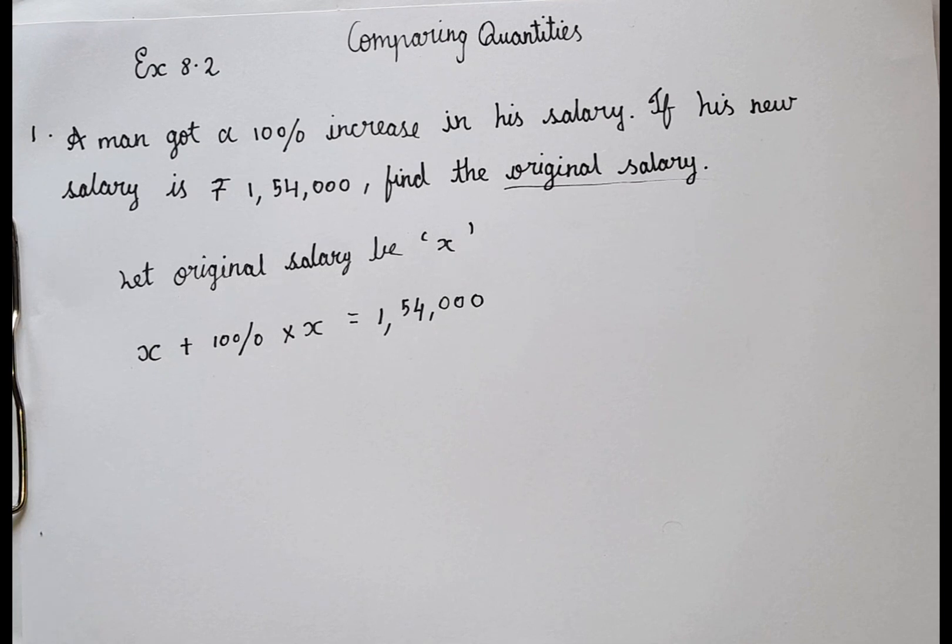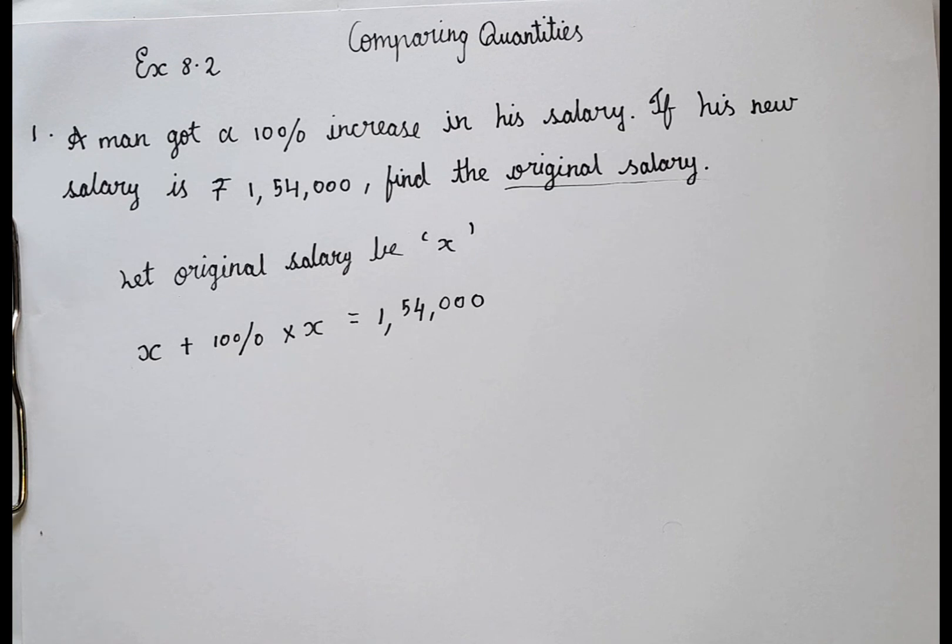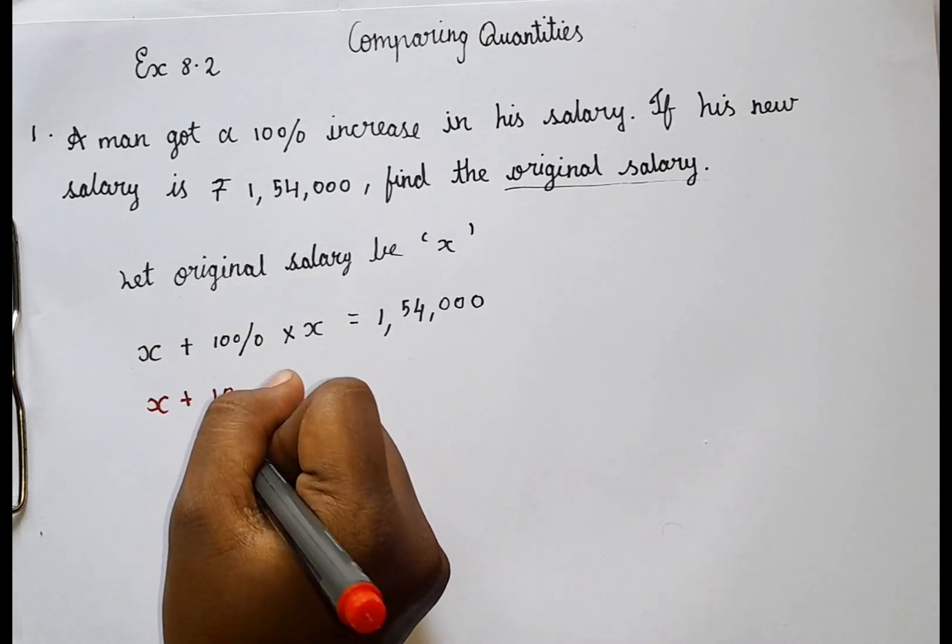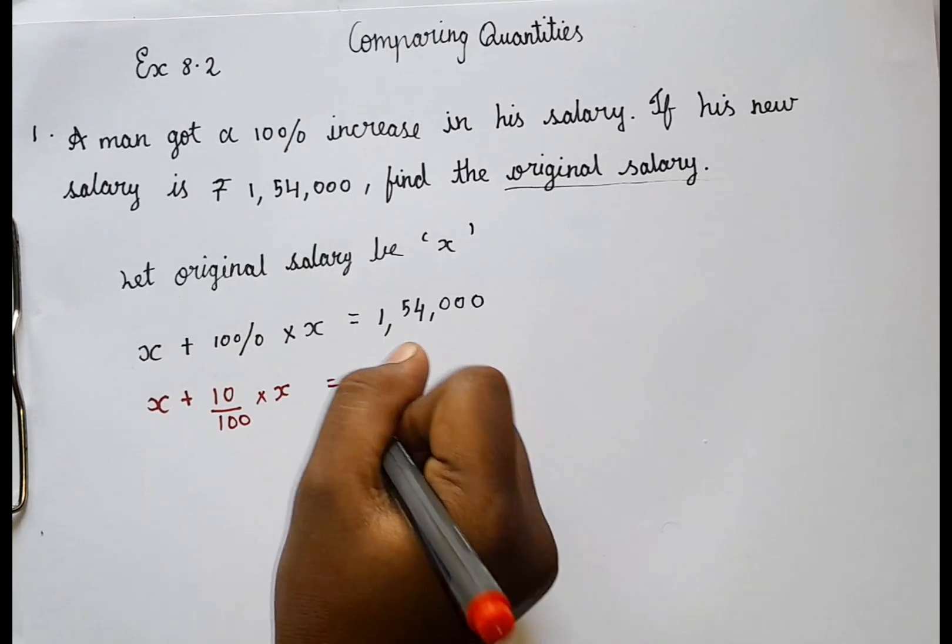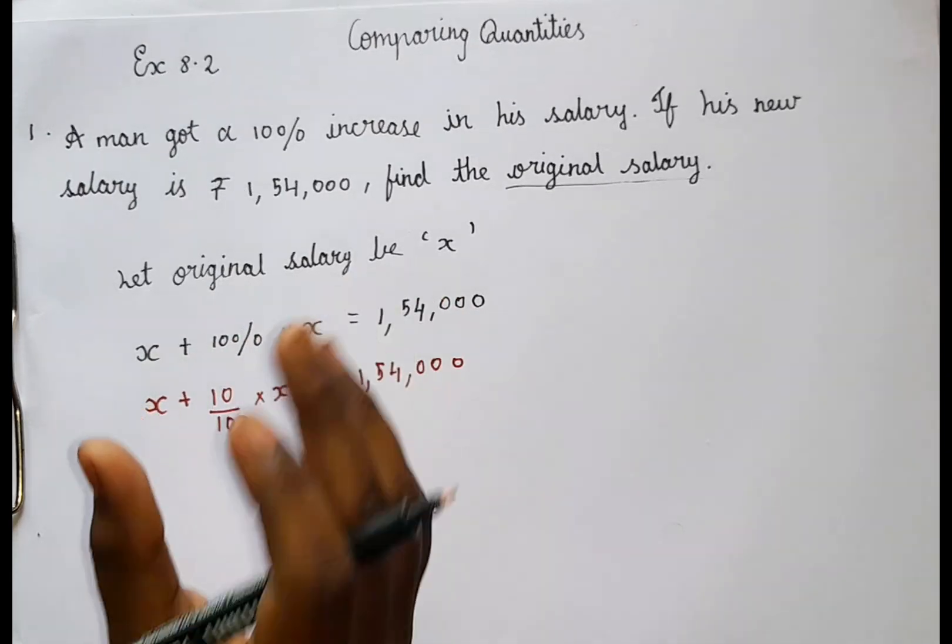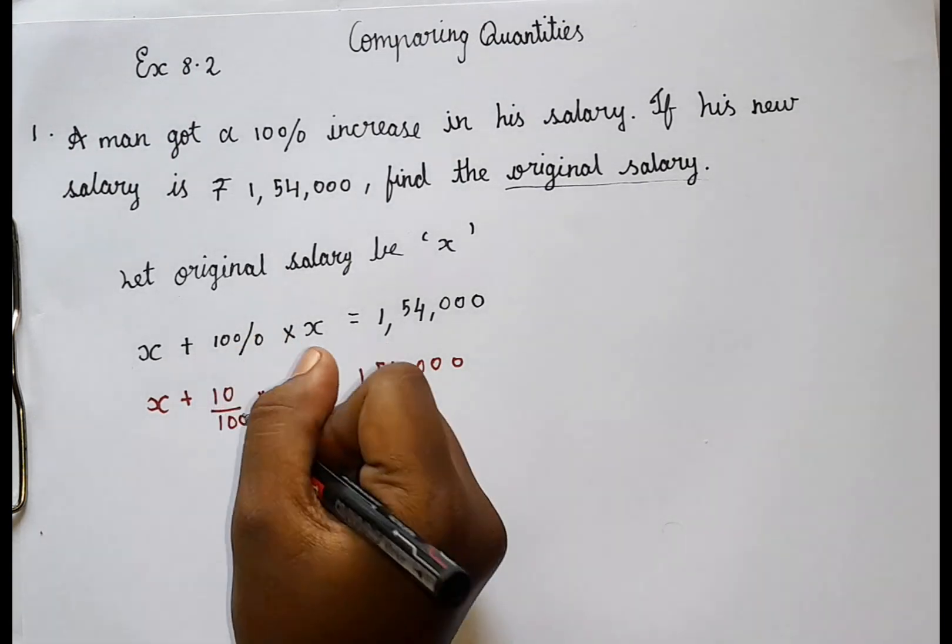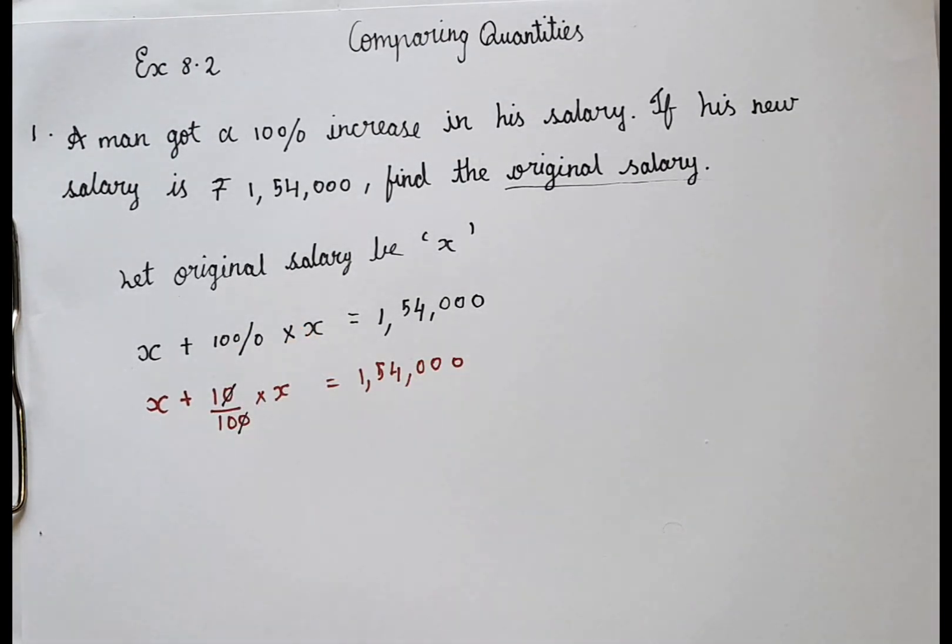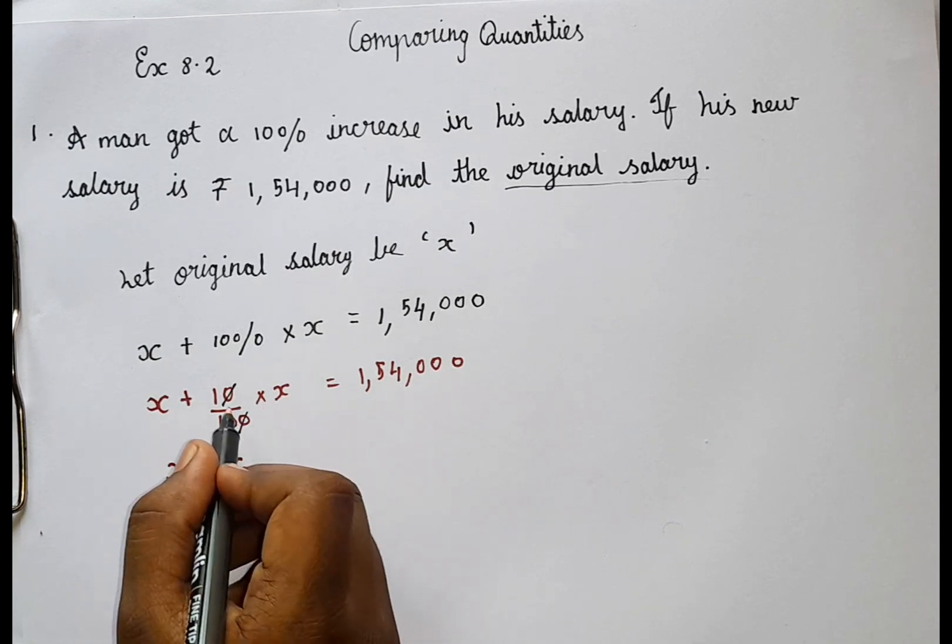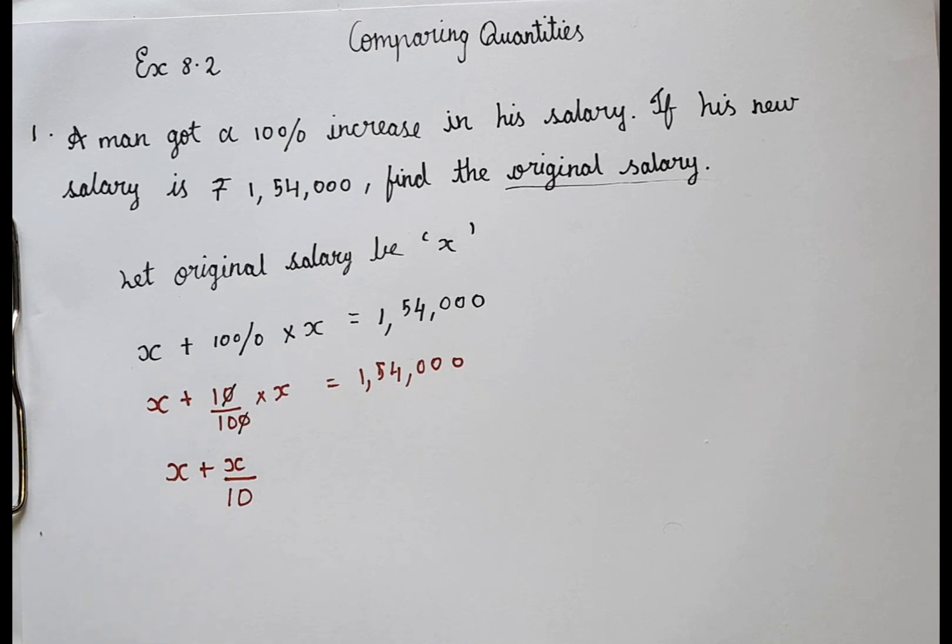So guys, how do we simplify this? We are going to cancel it. You guys might be thinking, how can we cancel even though there is no fraction? So the thing is, x plus 10 by 100 into x is equal to 1,54,000. So now I have converted the percentage to a number. That is 10 by 100. So now we can cancel it. 0, 0, cancel. So now I have x plus x by 10. So I just multiply it. 1 into x is 1x.